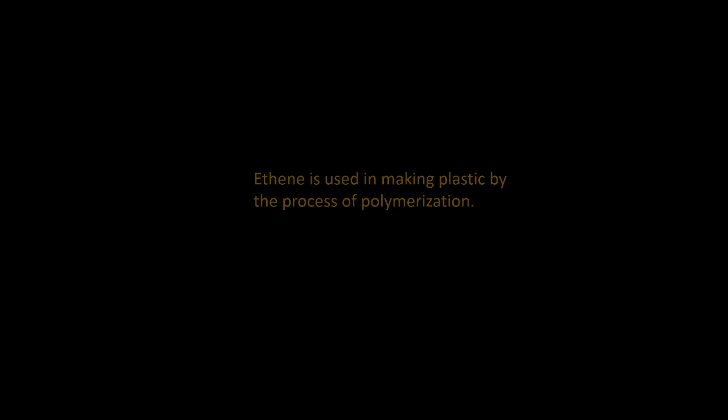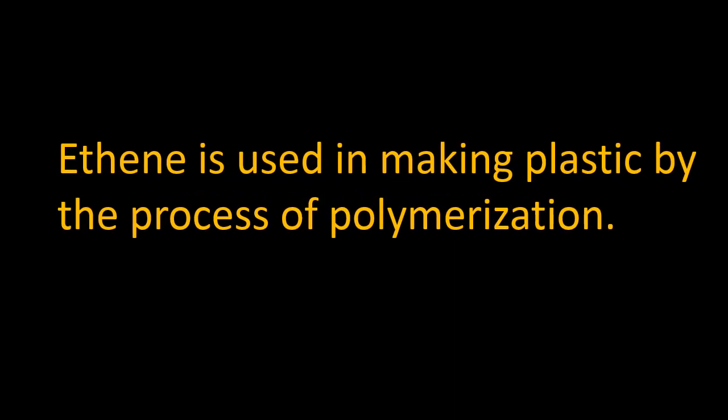Ethene is used in making plastic by the process of polymerization. Polymerization is a process where ethene is converted to polythene through an addition reaction in the presence of a catalyst. It's an exothermic process, meaning heat is liberated out — 'exo' means out and 'thermic' means heat. It requires high temperature and pressure.